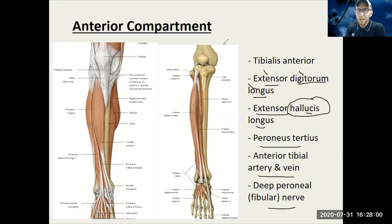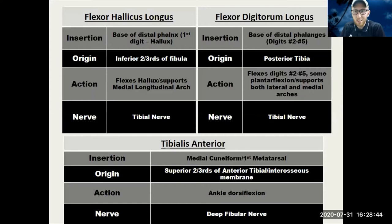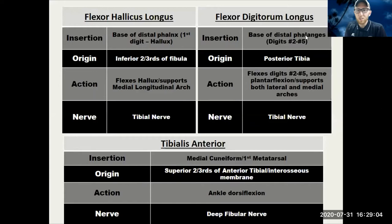There are also the flexor hallucis longus and flexor digitorum longus — just like the extensors but on the flexor side. We're more focused on the nerve and the action. Just like the forearm, we don't really focus on insertion or origin that much, but we do focus on the action and the nerve. The action is dorsiflexion — toes to the ceiling — and the nerve is the deep fibular nerve.